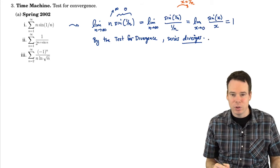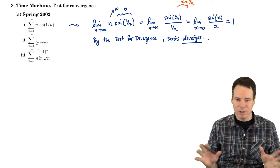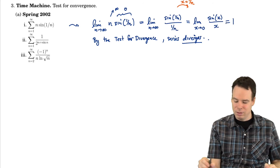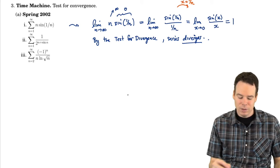Notice it's the test for divergence. What it allows us to do is test whether the series diverges, not whether it converges. If the terms don't go to 0, the series diverges. If the terms do go to 0, there's still more work to do.